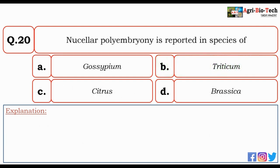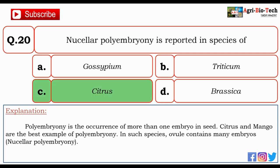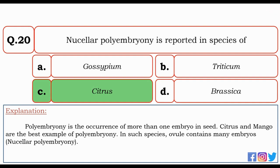Next question: nucellular polyembryony is reported in species of — Gossypium, Triticum, Citrus, or Brassica? The correct option is C — Citrus. Polyembryony is the occurrence of more than one embryo in a seed. Citrus and mango are the best examples of polyembryony. In such species, the ovule contains many embryos, i.e., nucellular polyembryony.